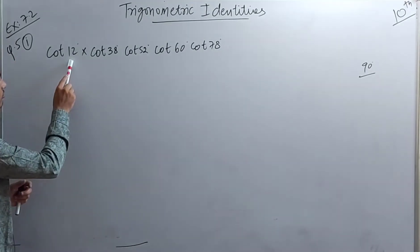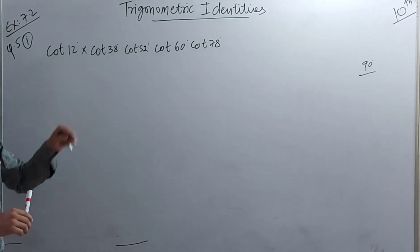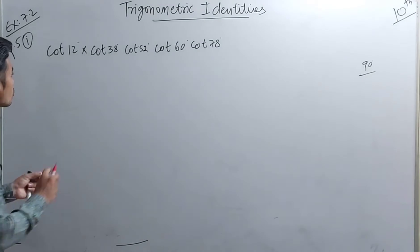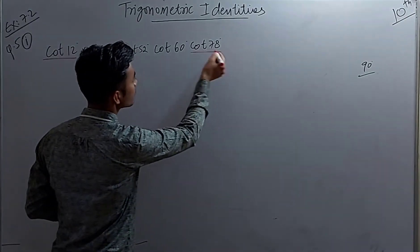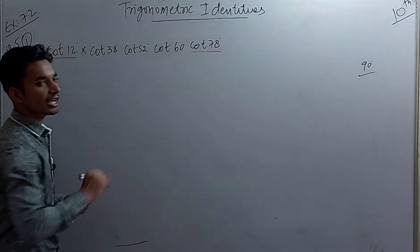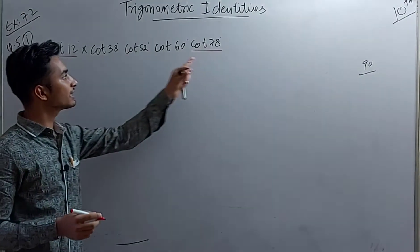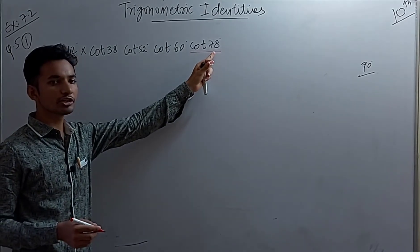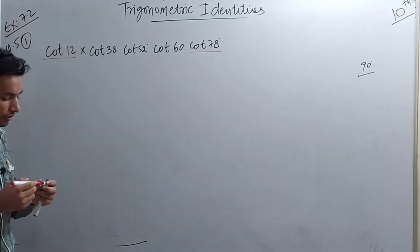We need to separate the terms that give 90° when combined. If we deduct 12° from 90°, we get 78°. So this term — cot 12° — and this term — cot 78° — are a complementary pair. We need to convert 78° into 12° or 12° into 78°.